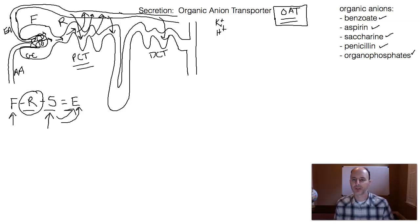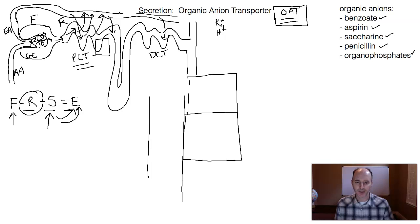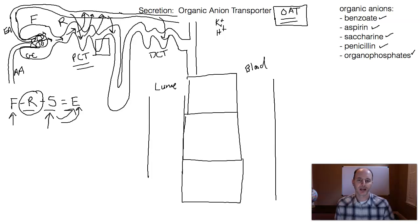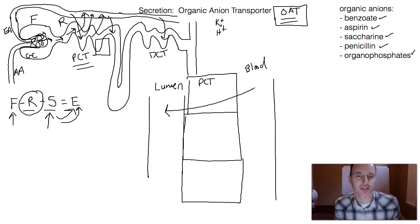Let's take a closer look at the proximal convoluted tubule. I want to zoom in on a portion of the proximal convoluted tubule so that we can look at both the lumen of the nephron and the cuboidal epithelial cells that line the lumen, and then connect that over to the blood. To orient yourself: we have blood on one side, the lumen of the nephron on the left-hand side, and these are the proximal convoluted tubule epithelial cells. If we're talking about secretion, we want to get something from the blood into the lumen — that is the secretion mechanism.